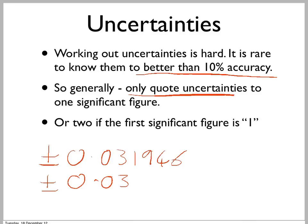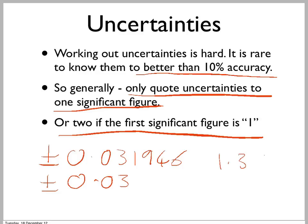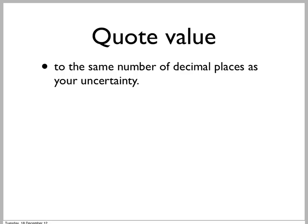So the general rule is: only quote uncertainties to one significant figure — that's the first non-zero figure — unless the first significant figure is one, in which case quote one more. Because if you've got an uncertainty like 1.35, changing this can make more than a 10% effect, so that would be quoted as plus or minus 1.3.